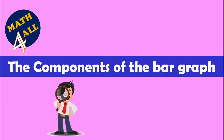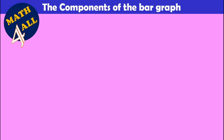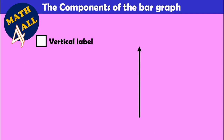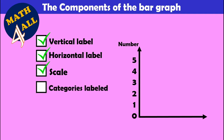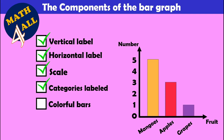What are the components of a bar graph? First, you need a vertical label, then a horizontal label. After that, we need a scale — like a ruler. Then we should have categories labeled, and we represent data using colorful bars.